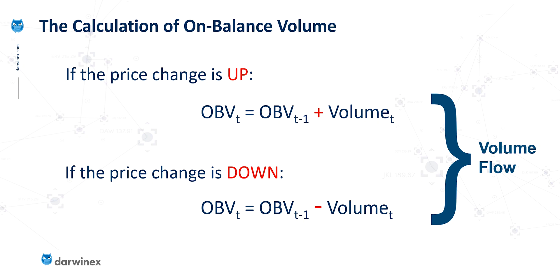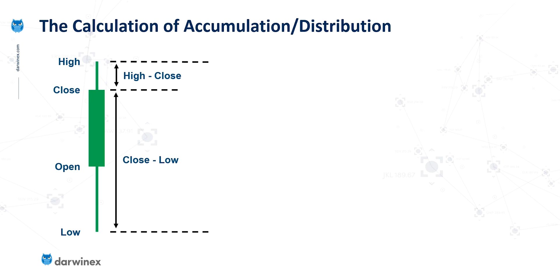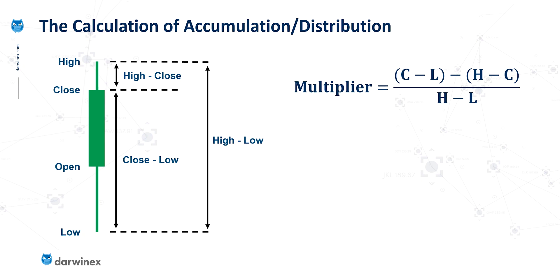The calculation for accumulation distribution is done differently. There are certain key values that are taken from the bar: the difference between the close and the high, and the difference between the close and the low. This is then compared to the entire range of the bar, and this gives us what's called our multiplier or money flow multiplier.